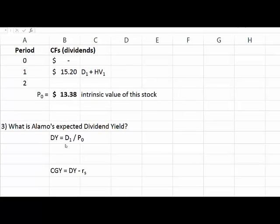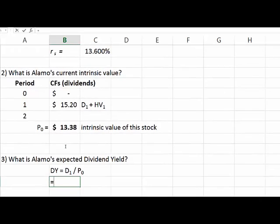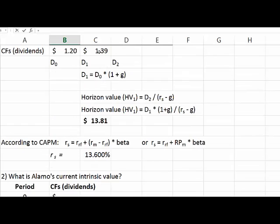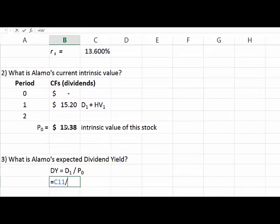The final question is, what's the expected dividend yield? We know the dividend yield is dividends over price. The dividend is $1.39, dividends next year. And the price today is the one we just found, which was $13.38.